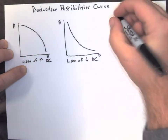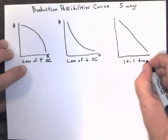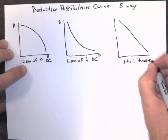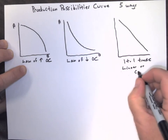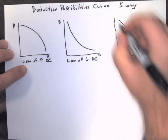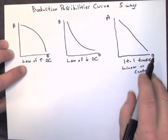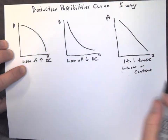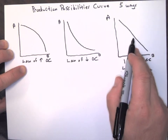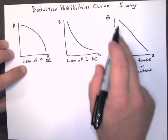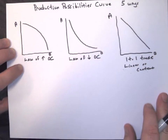A very simple case would be a one-to-one trade, which gives us a linear or constant curve. That means every time I make one of item A, I get exactly one less of item B. So if I went one over, one down, one over, one down, and drew a line, it would be straight. That would be our linear or constant curve.